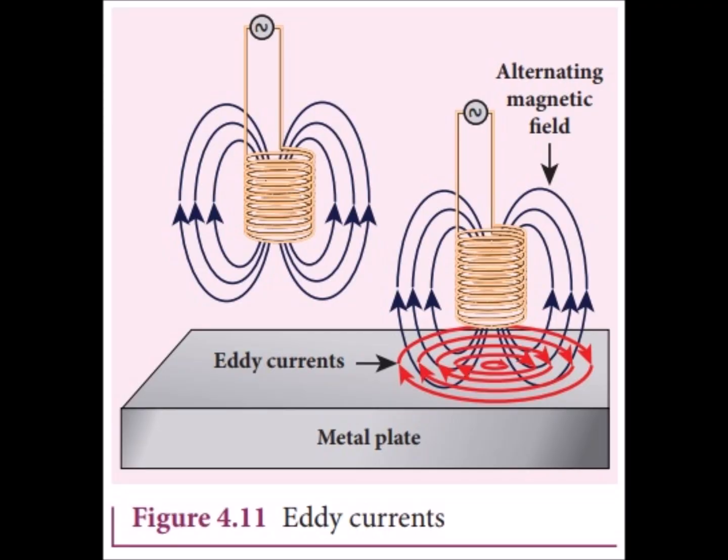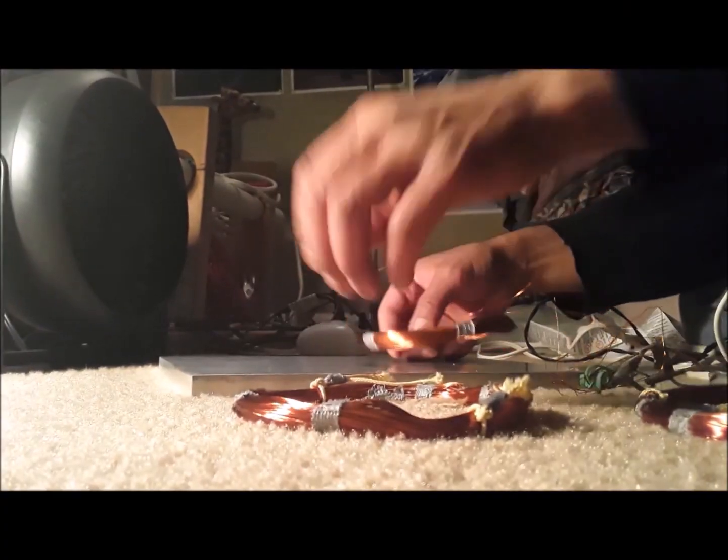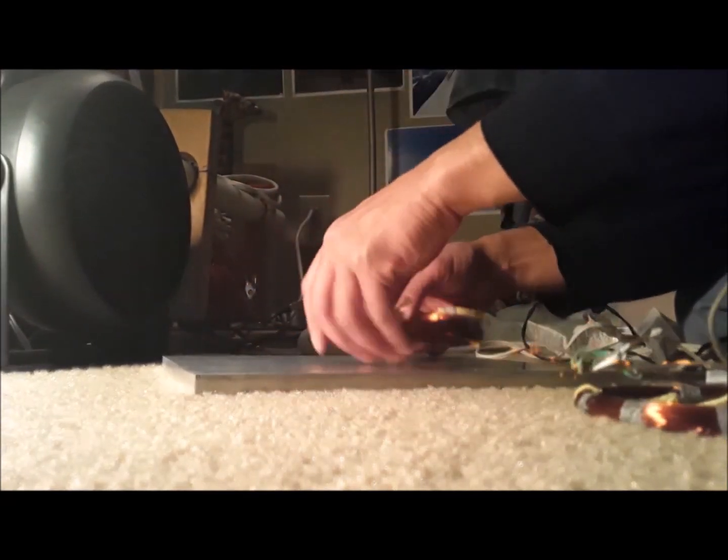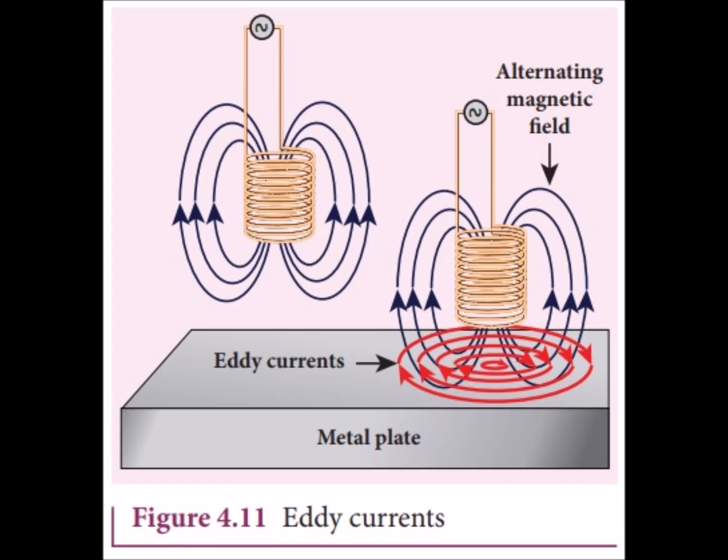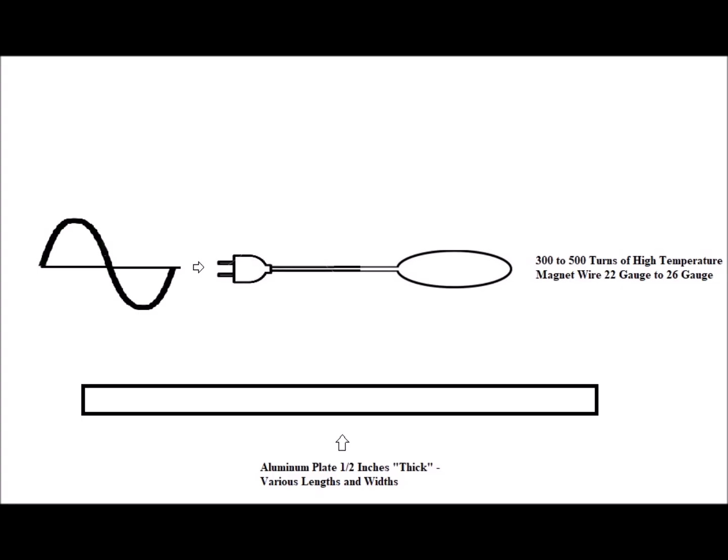My original maglev experiments involved air coils floating over aluminum plates. These coils did not have iron or steel cores which are usually used to strengthen magnetic fields to a certain degree. The reasoning behind this was to maximize the strength-to-weight ratio since the coils themselves were the floating elements in these particular levitation experiments.